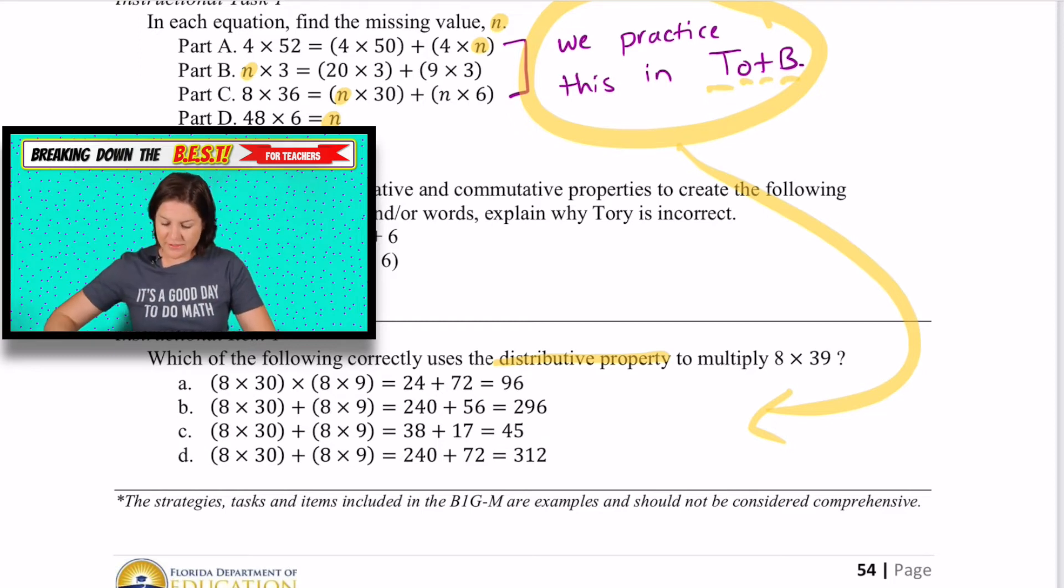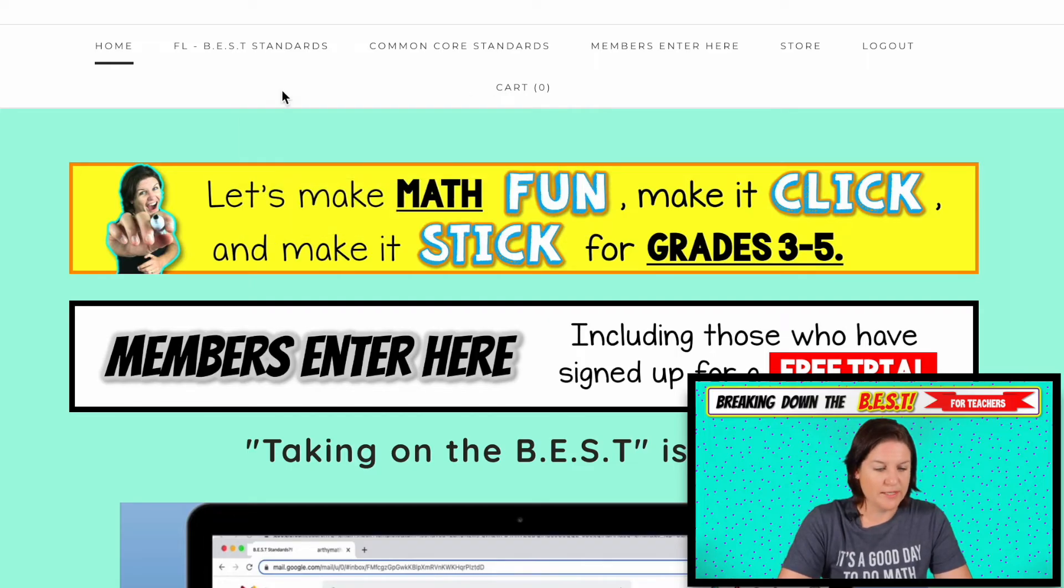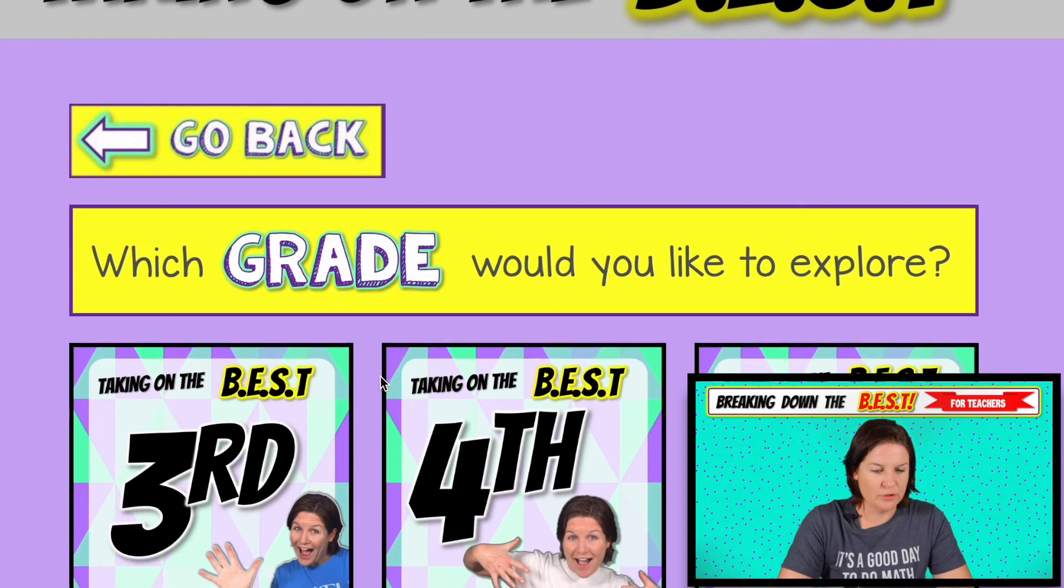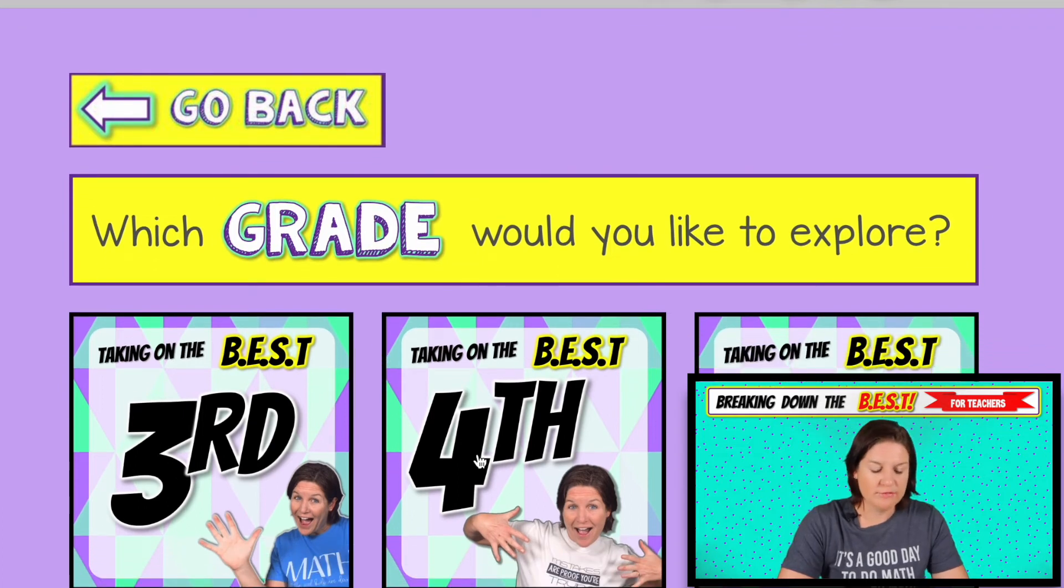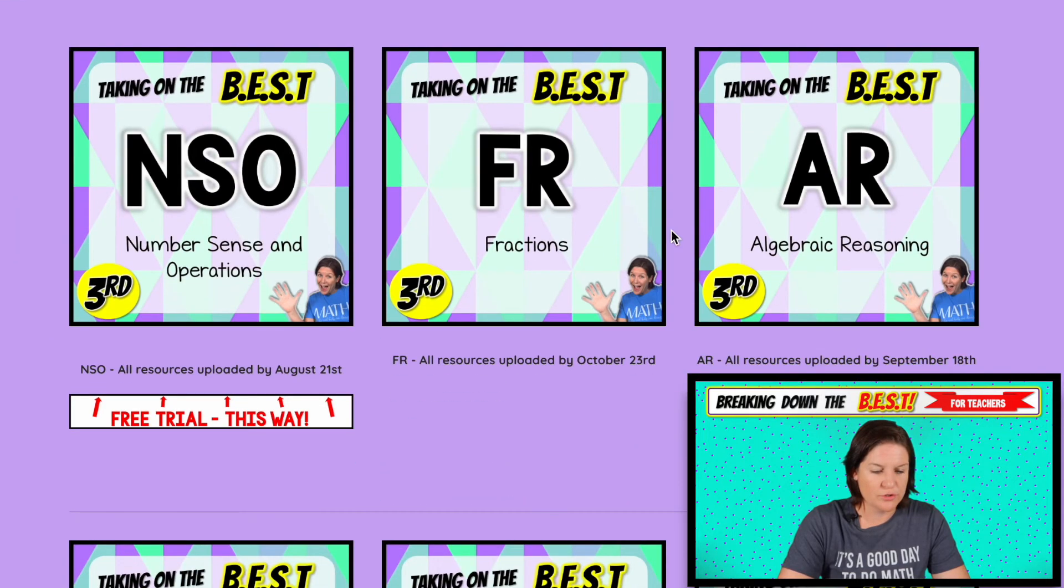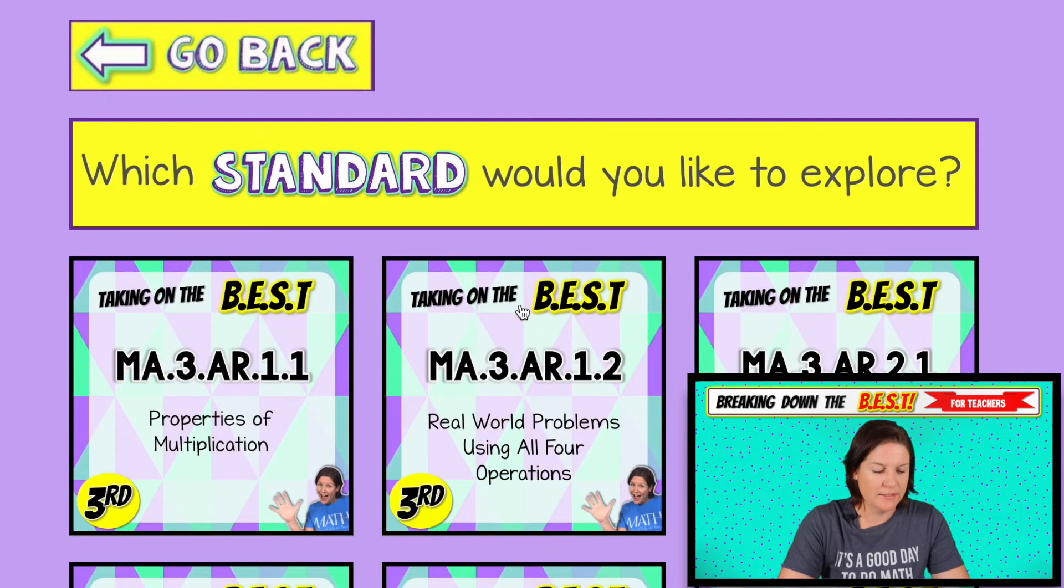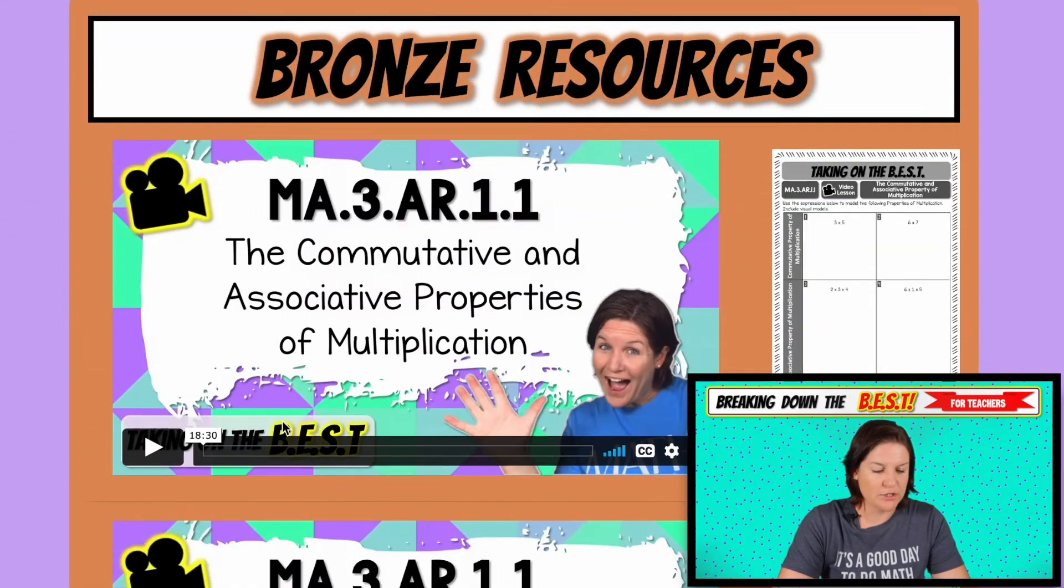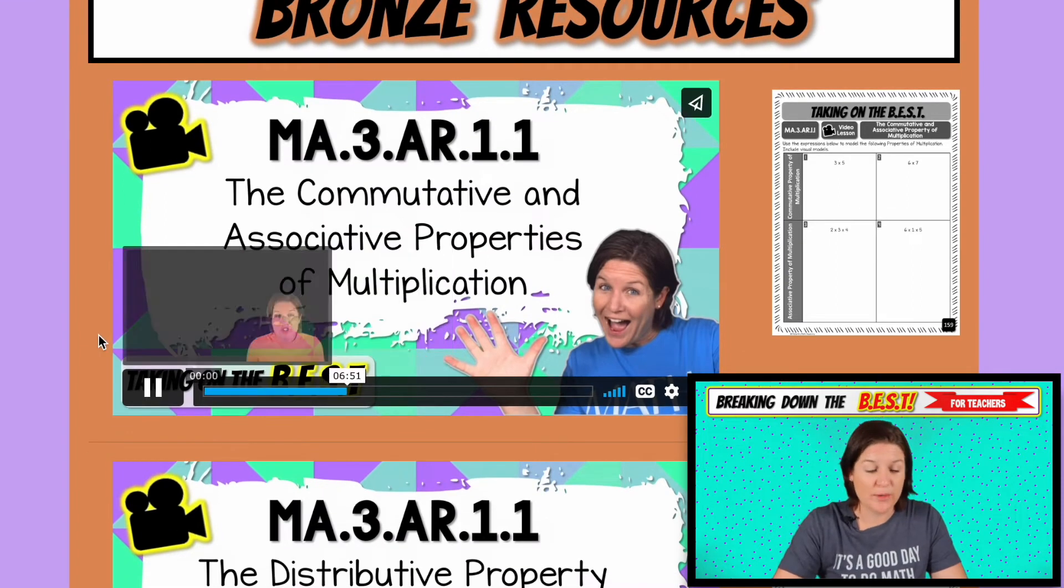All right. Now that we've gone over the standard, let me show you what you have access to with your membership. So here we are at the website. We're going to go to members, enter here, taking on the best. You should already, hopefully you're already logged in. If not, I might ask you to log in working on third grade and the first, oops, sorry, AR strand for algebraic reasoning. Three dot AR dot 1.1 properties and multiplication. Here are the resources that you have.